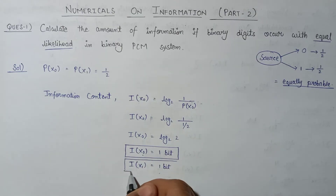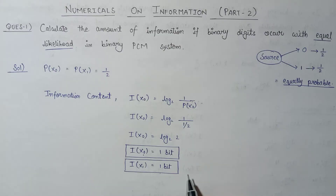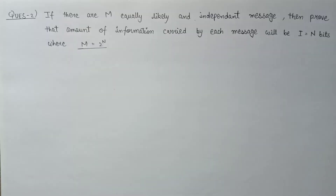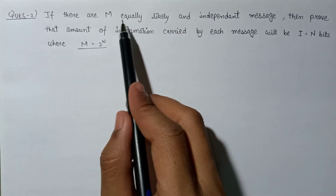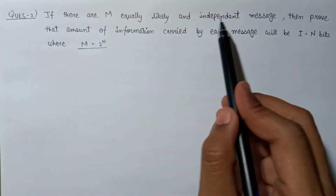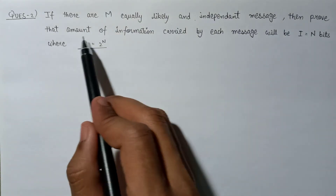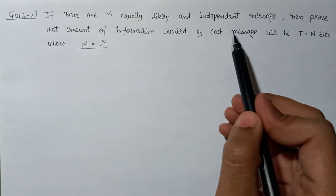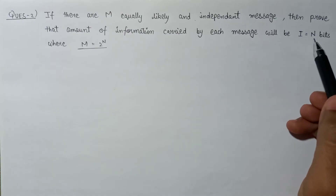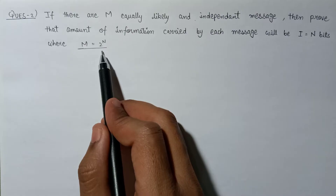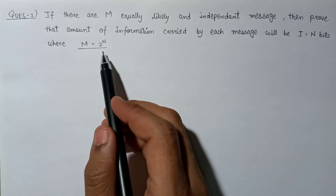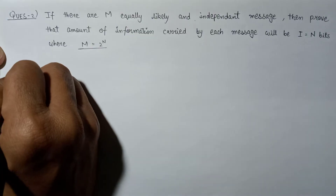This is the information content for the occurrence of 1, and that is all about question one. Now let us solve question number two: if there are m equally likely and independent messages, prove that the amount of information carried by each message equals n bits, where m = 2^n.